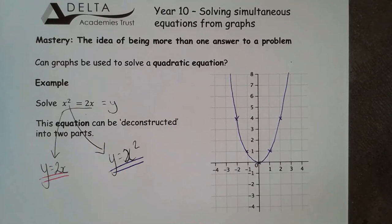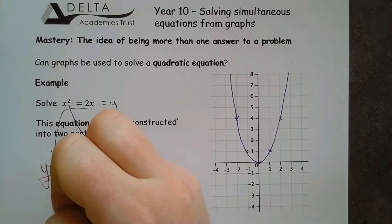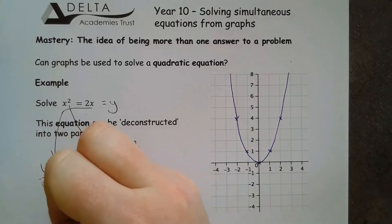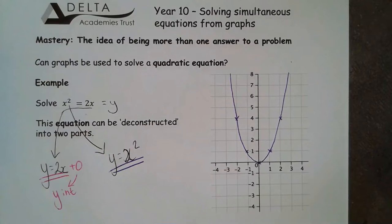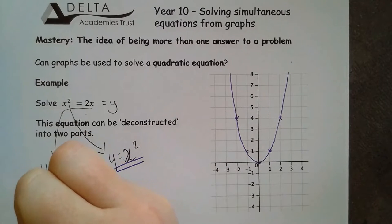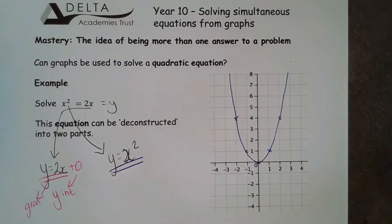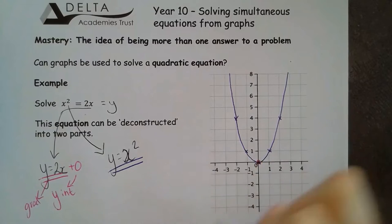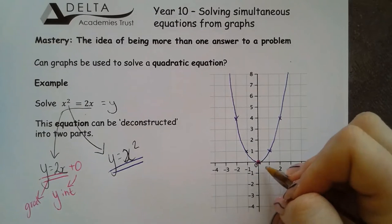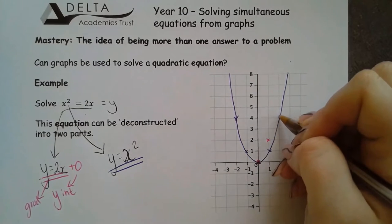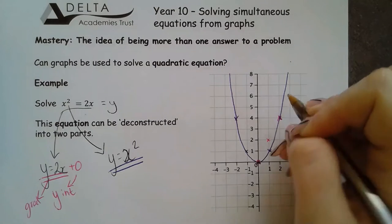Y equals 2x is our next line. This has not got a y-intercept visible so this is a plus 0 line. So our y-intercept is plus 0 and my gradient is 2. So I'm going to start by crossing at 0, 0 and I'm going to go across 1, up 2, across 1, up 2, across 1, up 2 and so on.